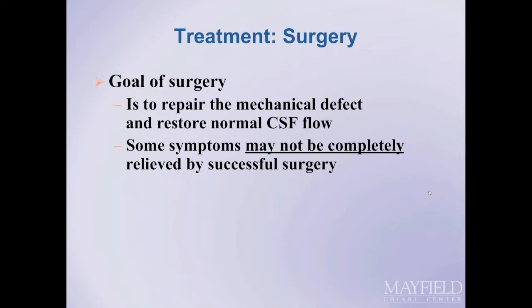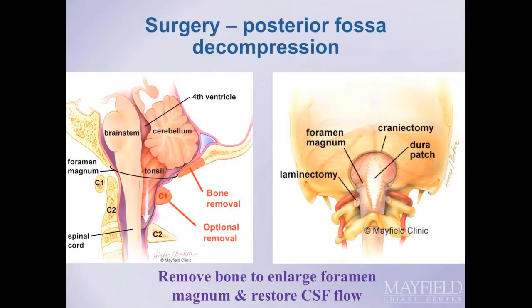The goal of surgery is to relieve symptoms thought to be caused by Chiari malformation. It is important to remember that surgery is not expected to cure all symptoms, and realistic expectations for symptom relief should be established. The structural goal of surgery is to repair the mechanical obstruction at the base of the skull and restore normal CSF flow across that junction. These pictures depict that restoration of flow at the base of the skull.